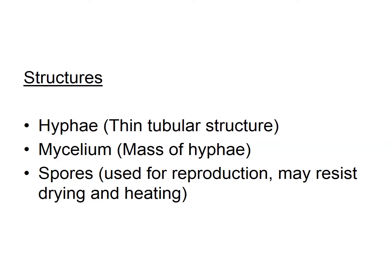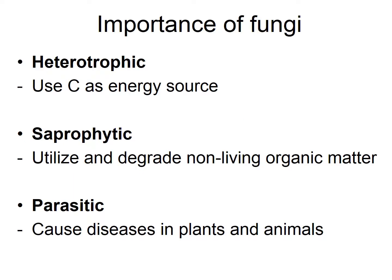The major structures that fungi form: first of all, the hyphae — a thin tubular structure that elongates into the soil environment. Then the mycelium, which is a mass of hyphae grouped together. Fungi are also known for making spores used for reproduction. What is special about spores is that they make the fungi resistant to drying and heating — they become dormant until environmental factors are favorable, then they start to grow. Spores are also their method of dissemination, spreading to different locations.